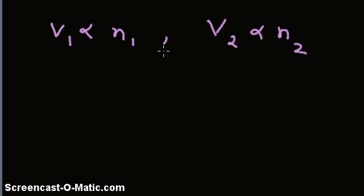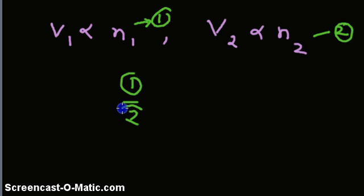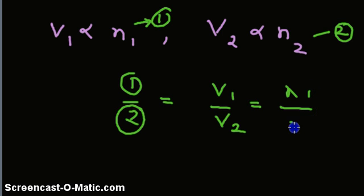As such, if we call this 1 and call this as 2, then dividing 1 by 2, we get V1 divided by V2 is equal to N1 divided by N2.